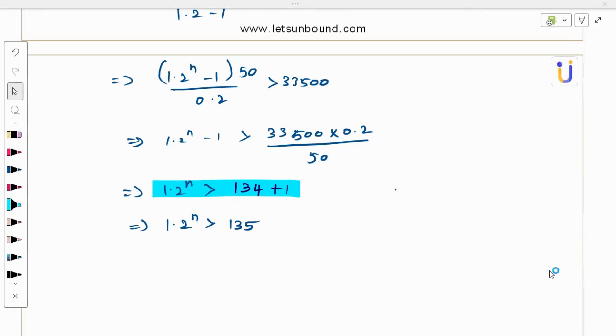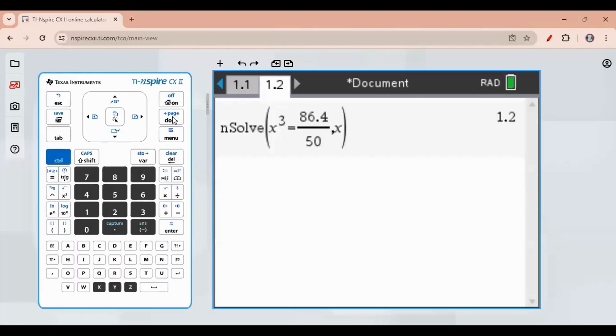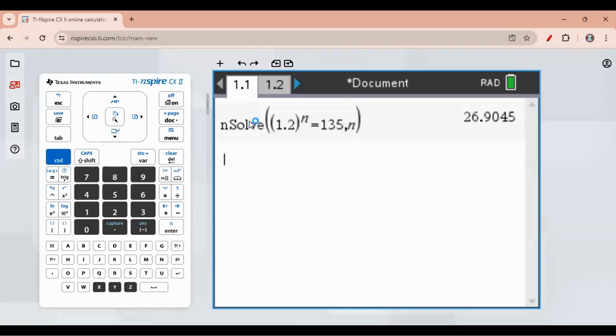So let's solve here. We need to go for n solve. My equation is 1.2 power n then equal. I'm going to use equal. Actually, it is an inequality, but we can solve this later. Oh, I used n. So let it be n. And it's 26.905. So n equals because I solved an equation.